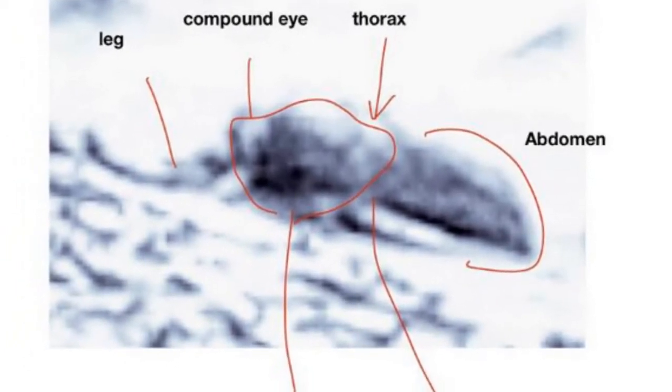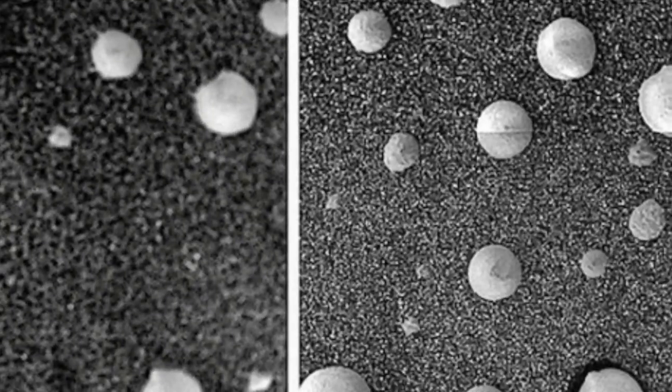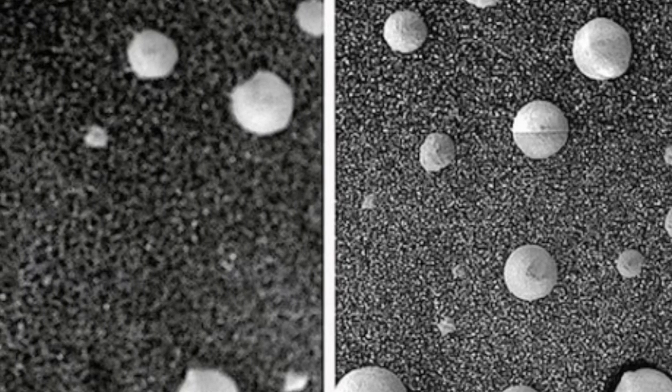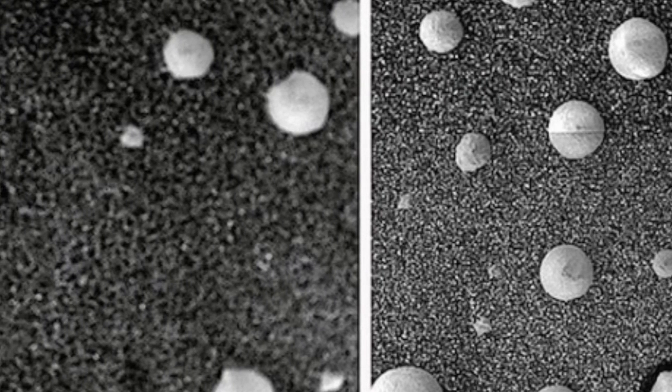Lynn Rothschild, the principal investigator on NASA's microarchitecture project, said at the time: right now, traditional habitat designs for Mars are like a turtle carrying our homes with us on our backs, a reliable plan but with huge energy costs. Instead, we can harness mycelia to grow these habitats ourselves when we get there.